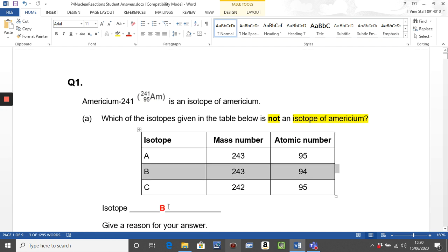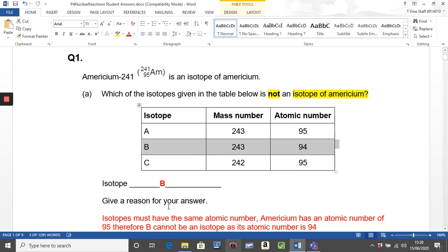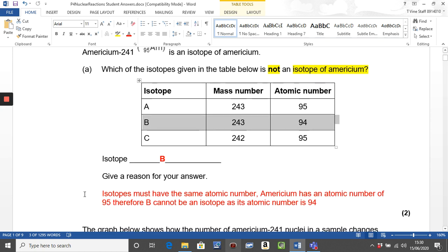So our answer is B, but you're asked to give a written reason for that. So it's important to get your words right. We've gone straight in by making sure we've told the examiner that we know isotopes must have the same atomic number. And Americium has an atomic number of 95. Therefore B cannot be an isotope as its atomic number is 92. So two marks, one for saying what an isotope is and one doing the specifics about Americium.